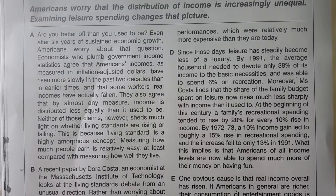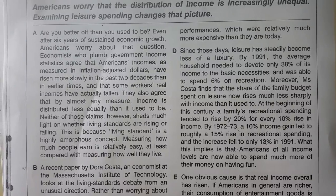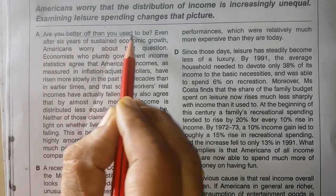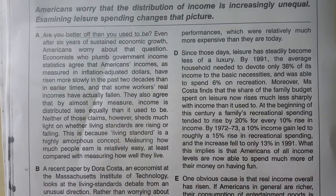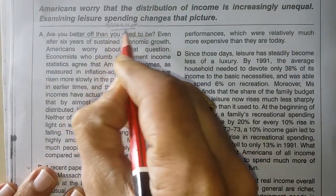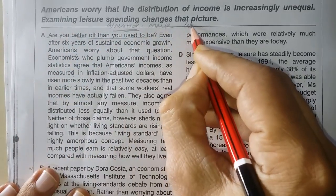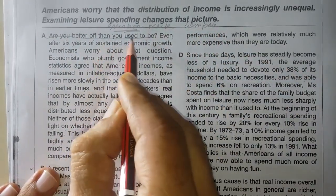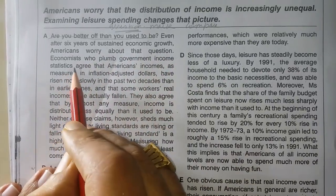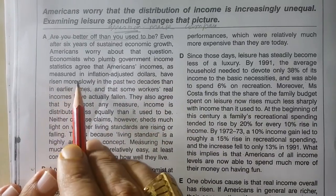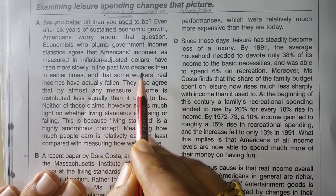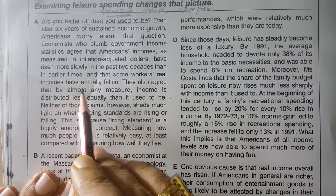The first important line is: 'Are you better off than you used to be?' My first tip is the question mark — notice it's there. Second tip is about comparison between two things or two times. 'Even after six years of sustained economic growth, Americans worry about that question. Economists who study government income statistics agree that American incomes, as measured in inflation-adjusted dollars, have risen more slowly in the past two decades than in earlier times, and that some workers' real incomes have actually fallen.'